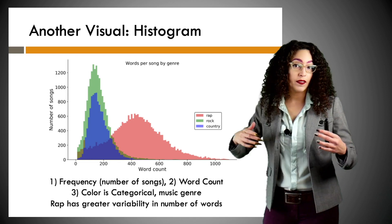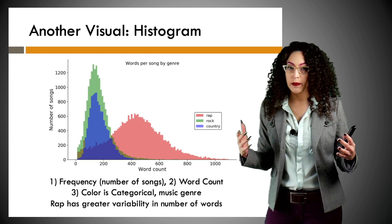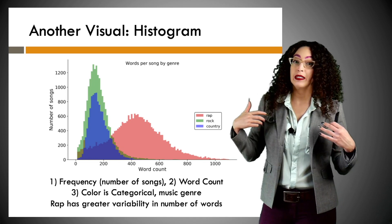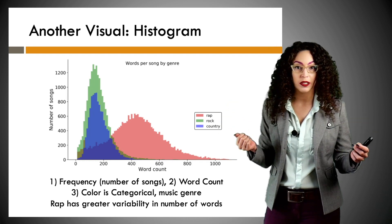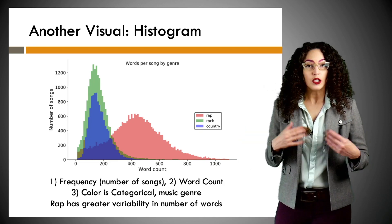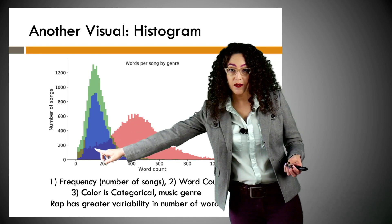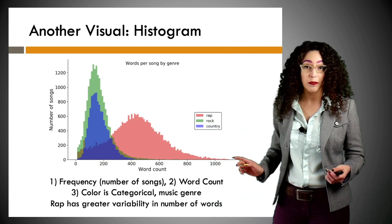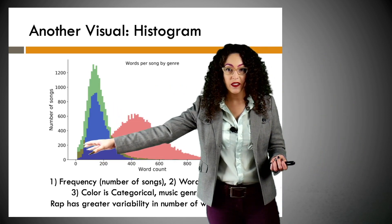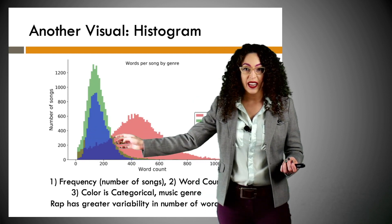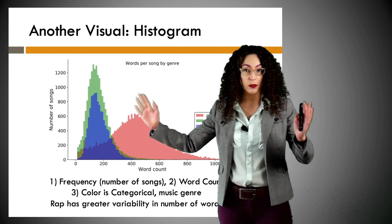Which of the three categories — rock, rap, or country — has the most variability? Basically, some of their songs have very few words and some have a lot. If we look at just the distribution of rap songs, we see that some songs have very few words and some have over a thousand, maybe like Eminem's Rap God. But if we look at rock and country, there is much less variability — at most either one will have maybe 400 or 500 words. So their spread is much tighter.